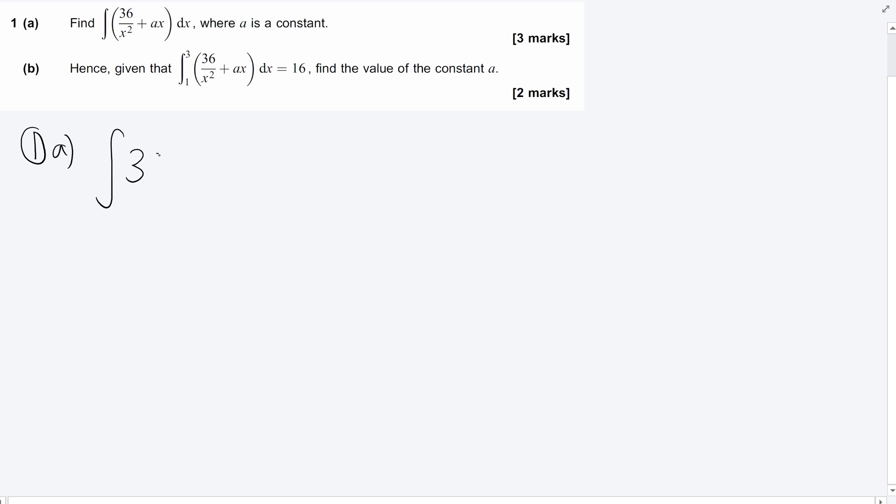Now, first thing we need to remember is that this can be written as 36x to the minus two plus ax, and then we're integrating with respect to x. And that's actually your first mark there, writing that as x to the minus two.